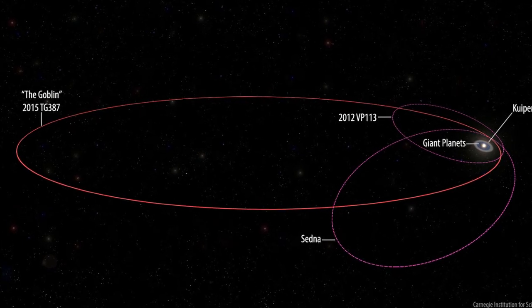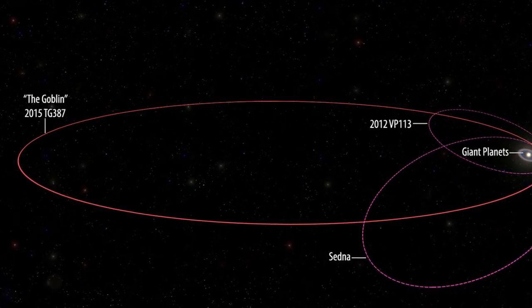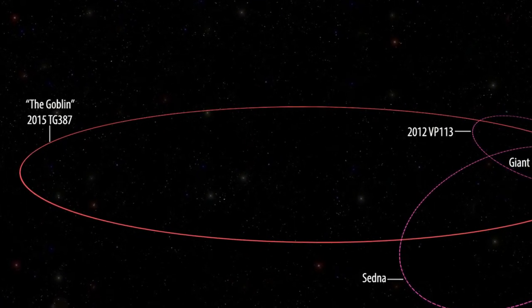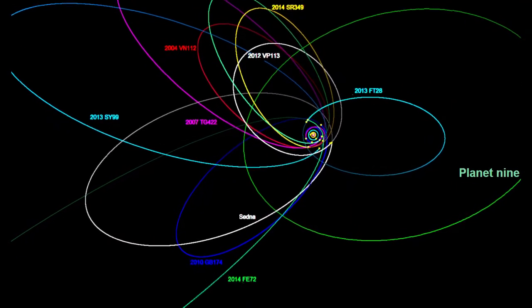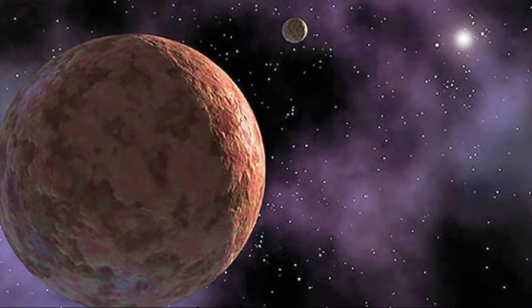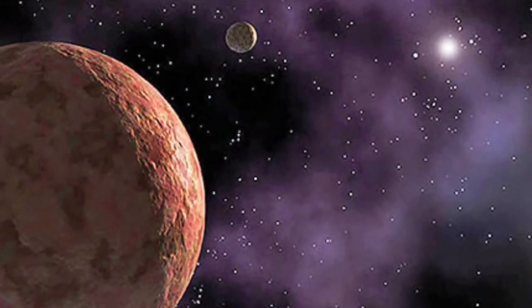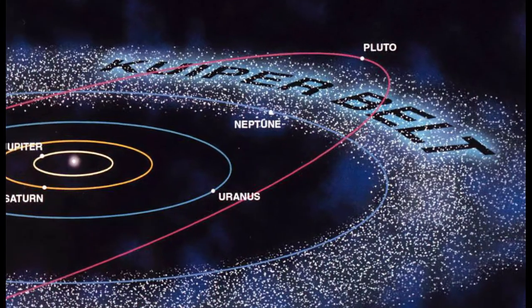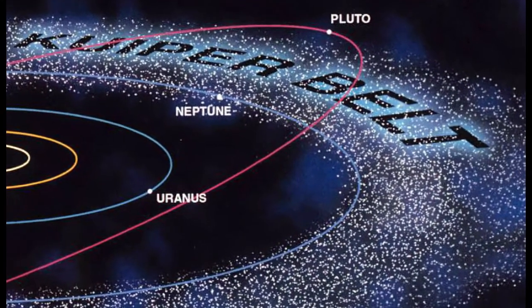There's also a dwarf planet nicknamed the Goblin, discovered at a distance of 80 astronomical units. There's even an object named 2014 FE72, whose orbit takes it out farther than 3000 astronomical units, the only known object of its kind with an orbit entirely outside Neptune's.